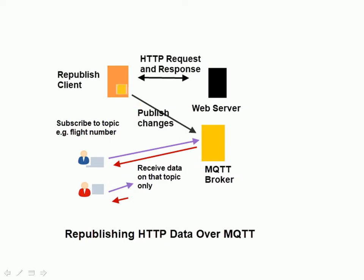We're going to reformat the data and publish it on the flight numbers, so the topics we're going to use are the flight numbers of the actual airlines themselves. This type of scenario can be implemented without making any changes whatsoever to the web server and the web page serving up the flight information, because it's all done on the republish client.